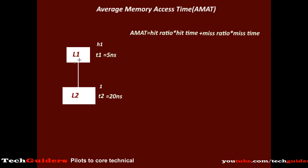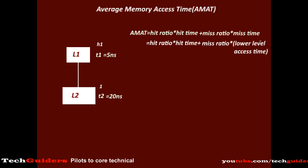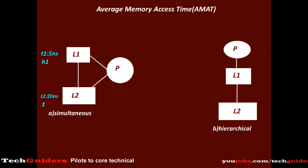For every hit, we access it from the current level itself, and for every miss, we are going to the lower level. Hence it is hit ratio × hit time plus miss ratio × lower level access time. In case of a hit, the time taken is T1, the access time of the current level, so the hit time is T1. But what is lower level access time? We cannot simply say lower level access time equals T2 — it depends on how the processor is accessing the lower level with respect to the higher level. There are two ways of access: simultaneous or parallel access, and hierarchical access.